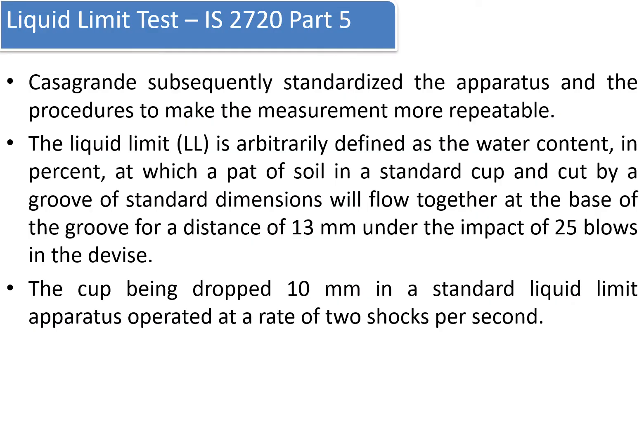Casagrande subsequently standardized the apparatus and procedures to make the measurements more repeatable. Liquid limit is arbitrarily defined as the water content in percent at which a part of a soil in a standard cup, cut by a standard groove of standard dimensions, will flow together at the base of the groove for a distance of 13 millimeters under the impact of 25 blows in the device. The cup is dropped 10 millimeters in a standard liquid limit apparatus operated at a rate of 2 strokes per second.